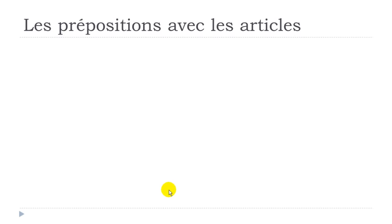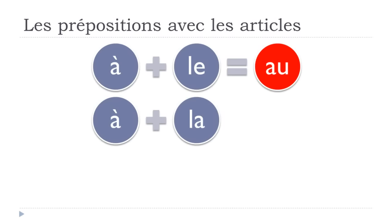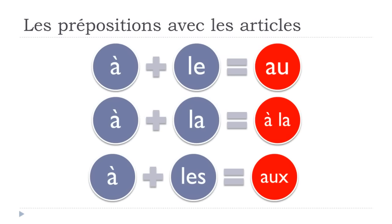To summarize: À plus LE becomes AU; À plus LA stays the same, it doesn't change at all; and À plus LES becomes AUX — written A-U-X but pronounced 'o.' That's the main thing you should remember about preposition À combined with les articles définis.